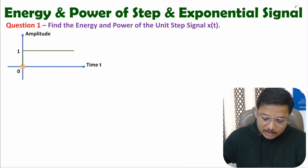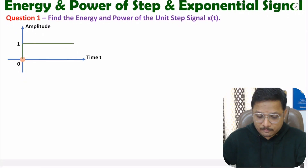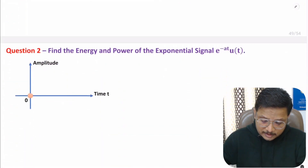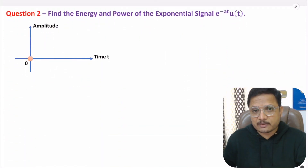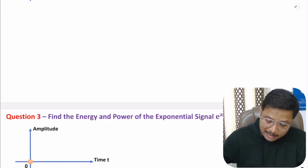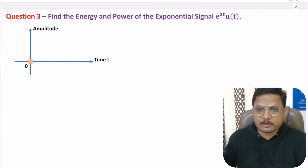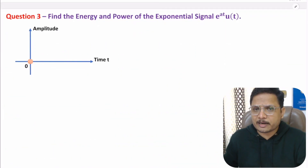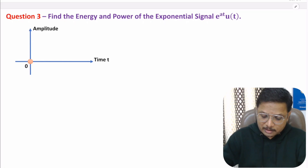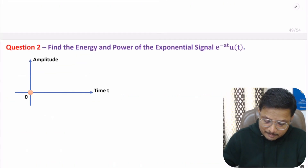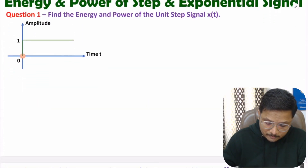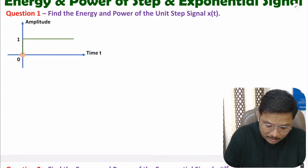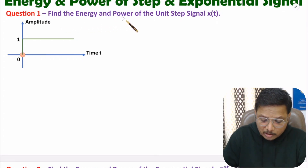So this is question number one, freeze the video and try it by your own. This is question number two, freeze the video and try it by your own. And this is the last question of this video. I hope you might have tried all those questions. Now I will explain the solution of question number one. In question one, we need to identify energy and power of unit step signal.